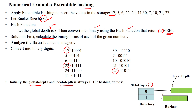The global depth is 1 for the given directory — the hash table. The global depth is 1 and the local depth is also 1, represented in the local depth field. The bucket can store 3 values in its memory locations because the bucket size is 3.